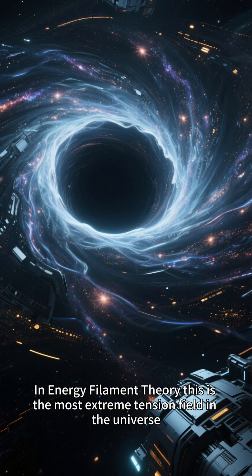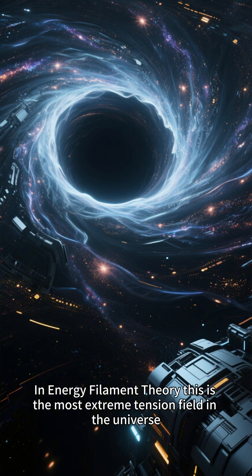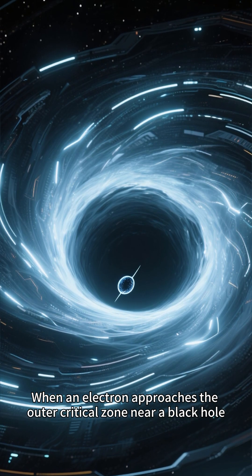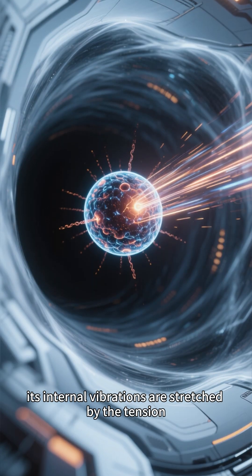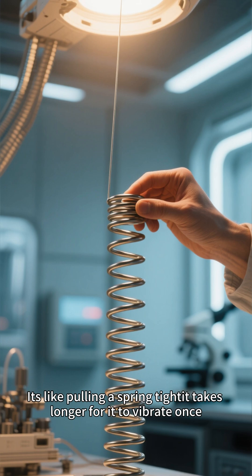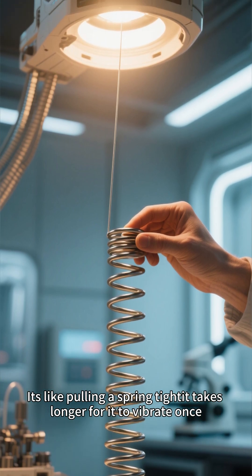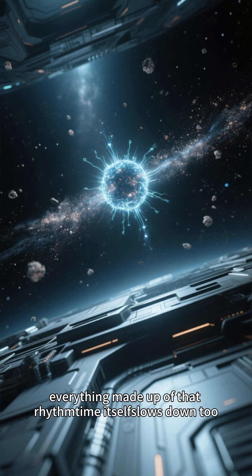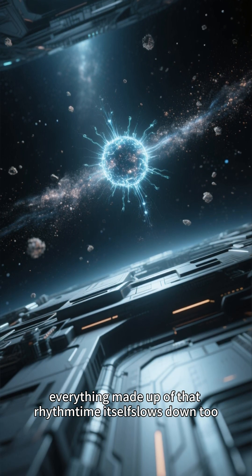In energy filament theory, this is the most extreme tension field in the universe. When an electron approaches the outer critical zone near a black hole, its internal vibrations are stretched by the tension. It's like pulling a spring tight, it takes longer for it to vibrate once. The particle's rhythm slows down, and consequently, everything made up of that rhythm, time itself, slows down too.